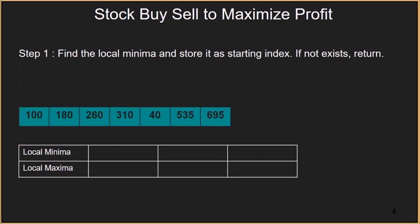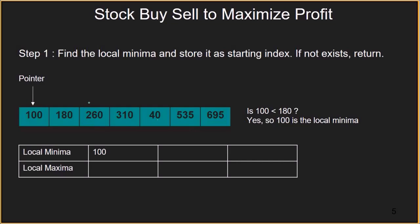Now let us do a dry run of the algorithm. We are given the array: 100, 180, 260, 310, 40, 535, and 695. Starting with step 1, we look at the first element 100 and check if it is smaller than the next element 180. Yes, it is, so 100 becomes the local minima.